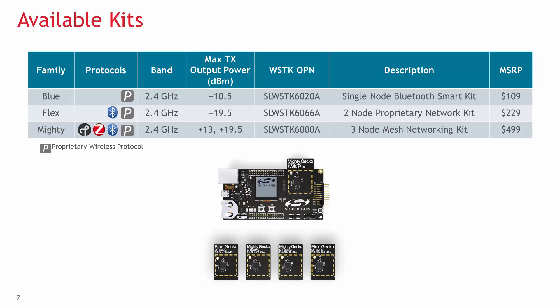There are three types of kits available for the three product families. The BlueGecko for Bluetooth applications comes with a single node. The FlexGecko kit contains two nodes and is great for proprietary wireless applications — getting a single kit will enable you to set up a TX/RX link. The MightyGecko kit includes three nodes so you can start building your mesh network application.